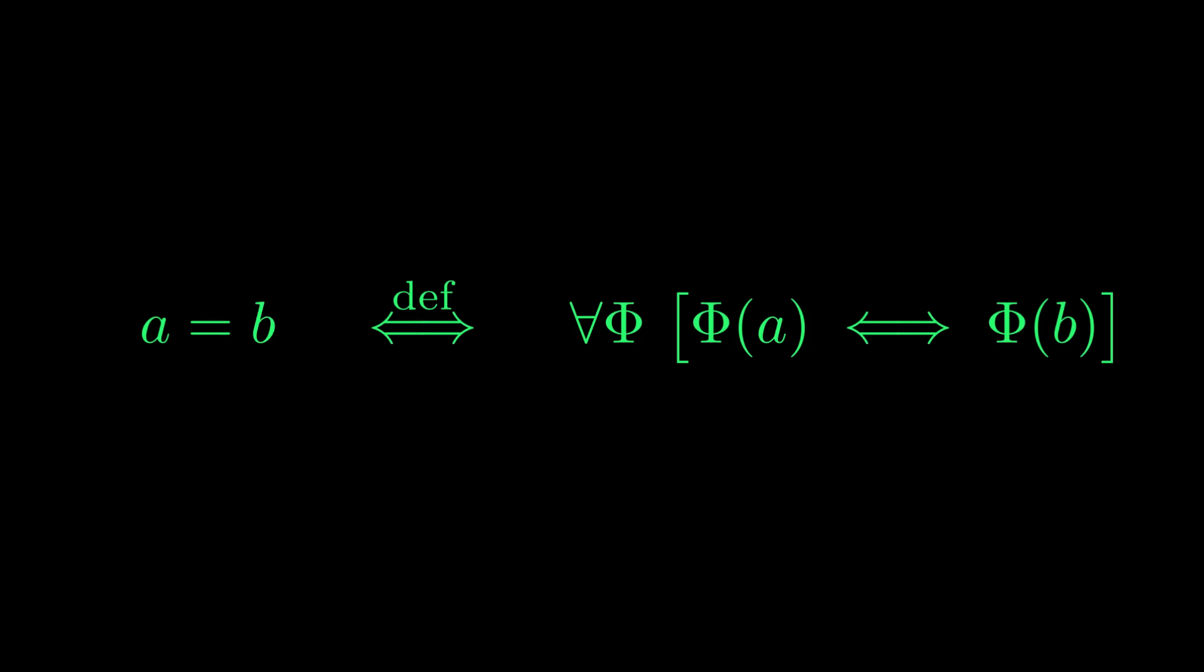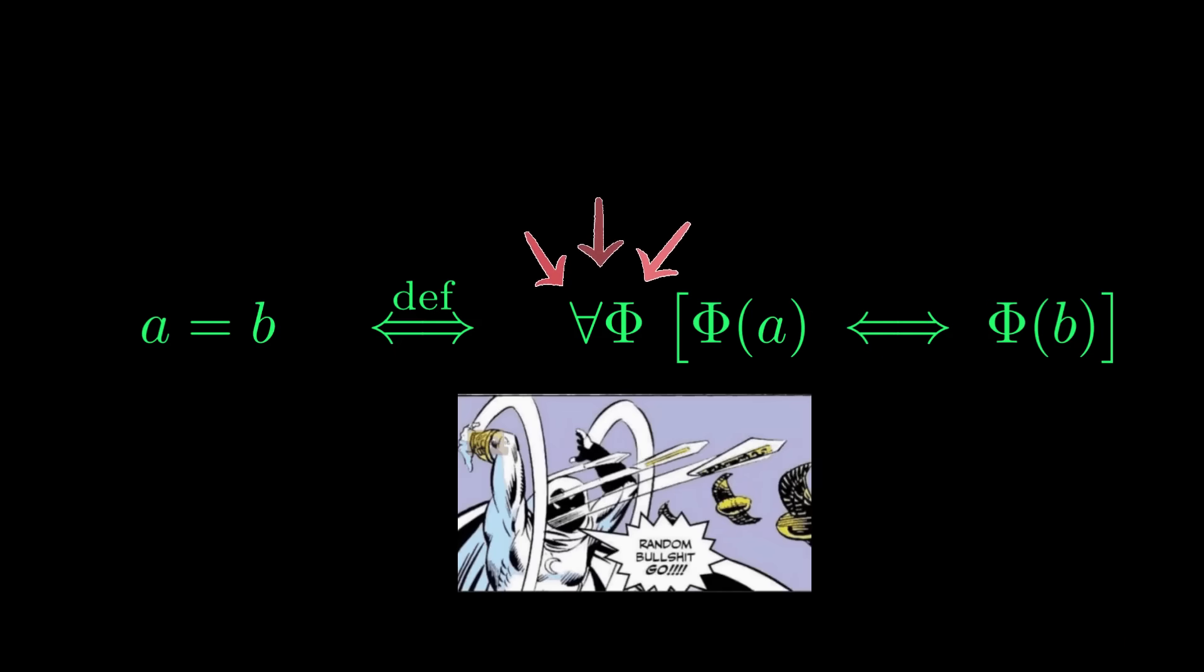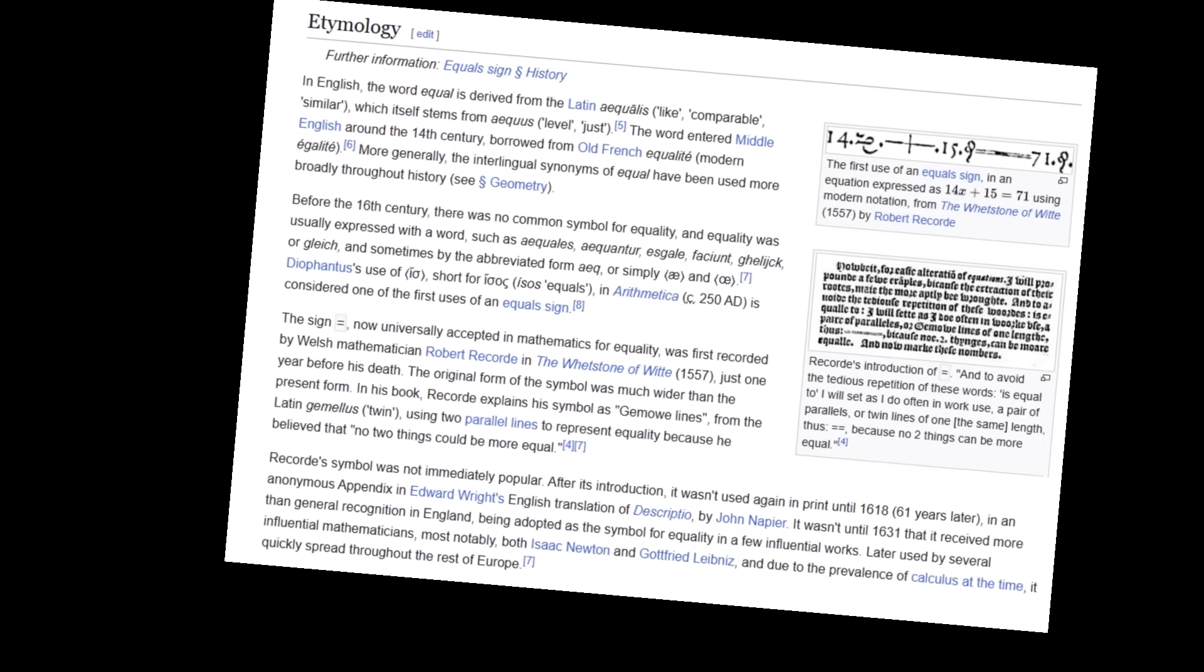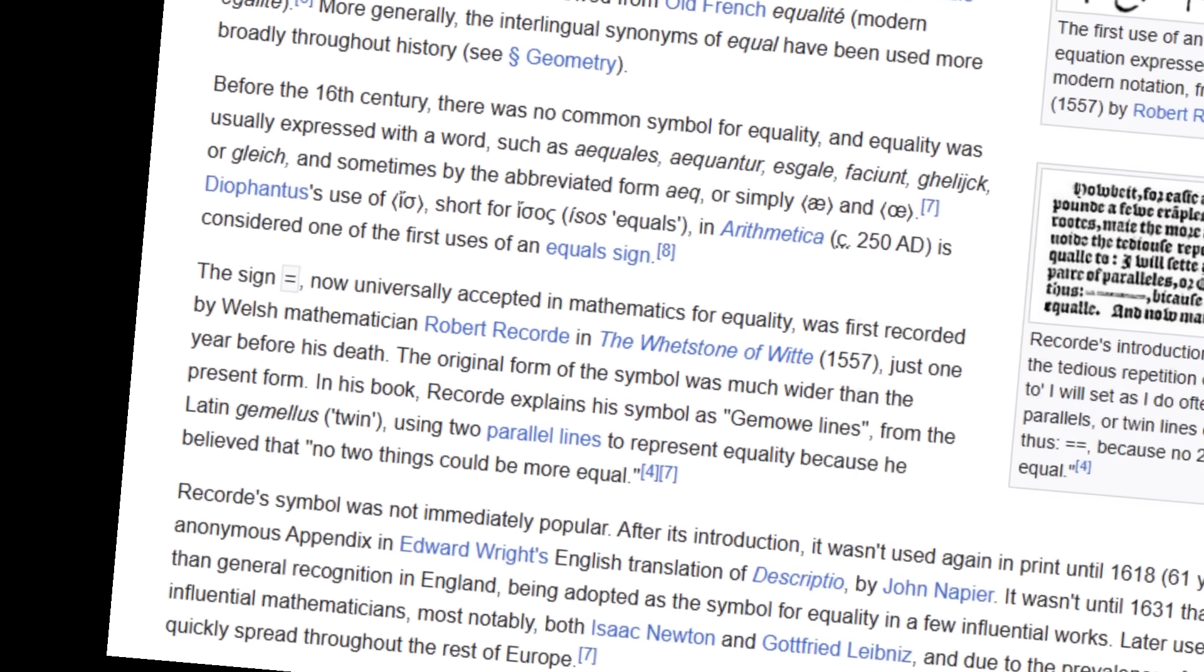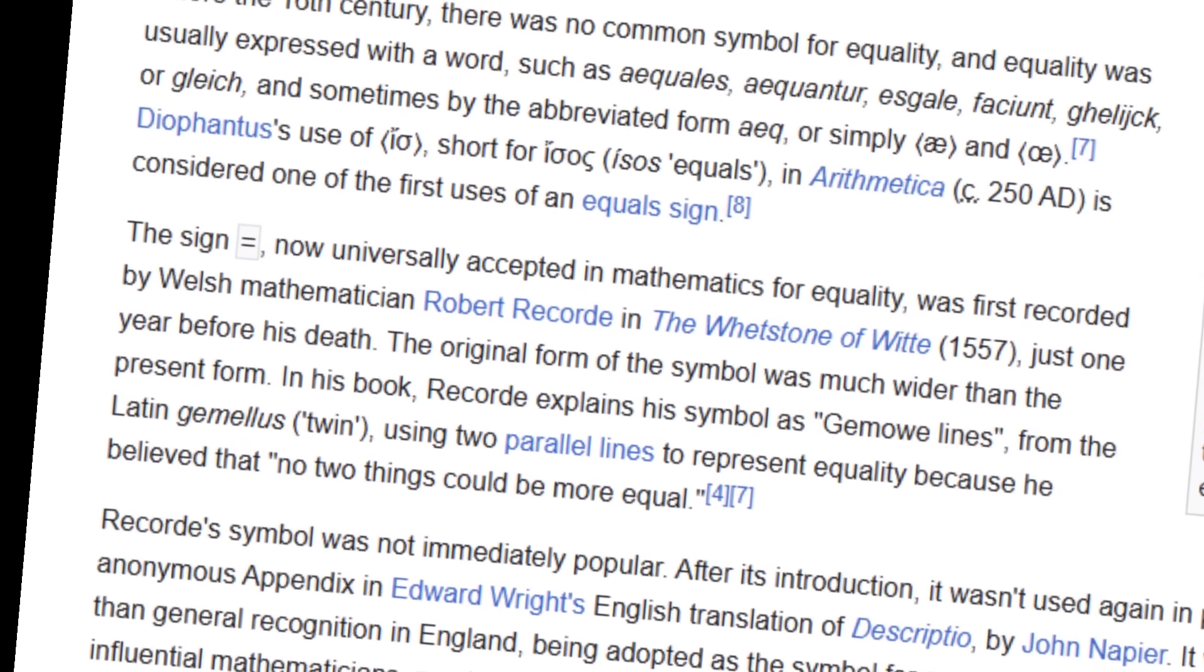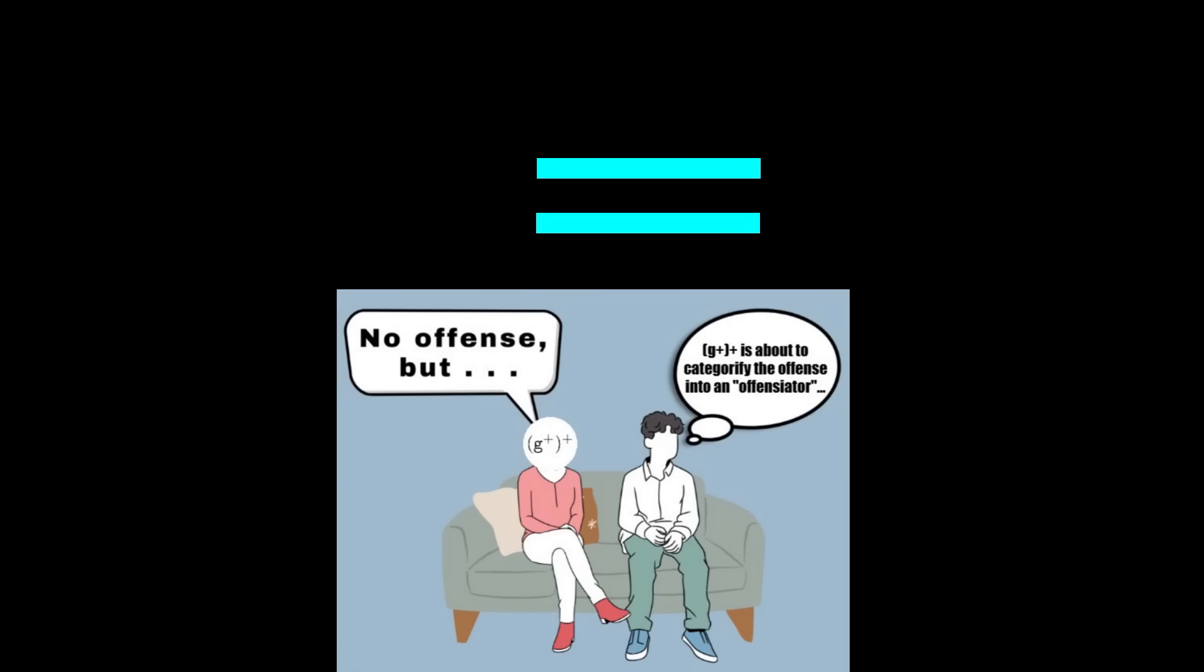I mean, what does it mean for two things to be equal if not that any property holding for one must also hold for another? Right, Leibniz? Leave it to philosophy to quantify an expression over literally everything. According to Wikipedia, the equal sign was introduced by the Welsh mathematician Robert Record, who denoted the concept of equality with two parallel lines because, quote, No two things could be more equal.